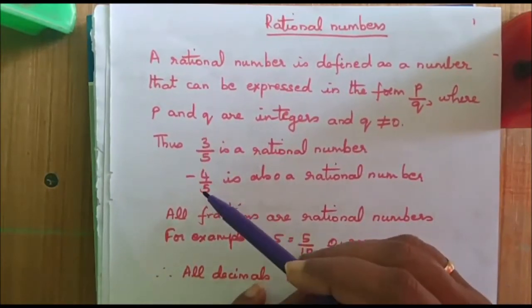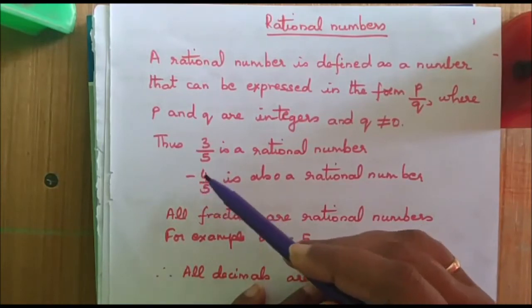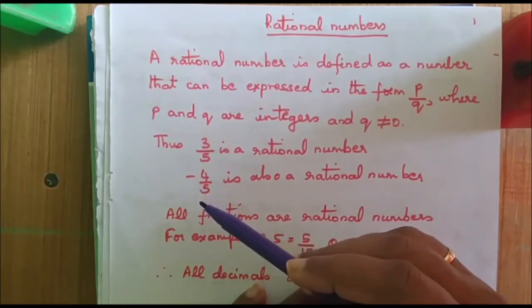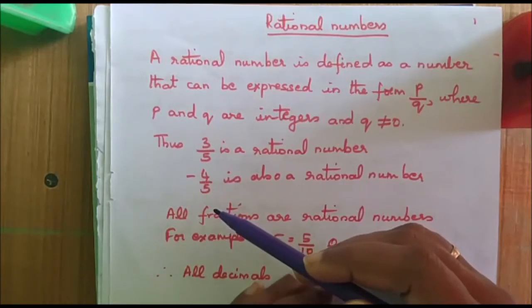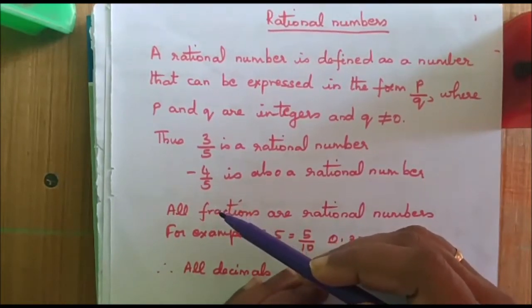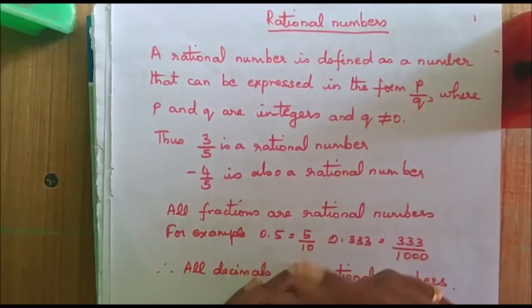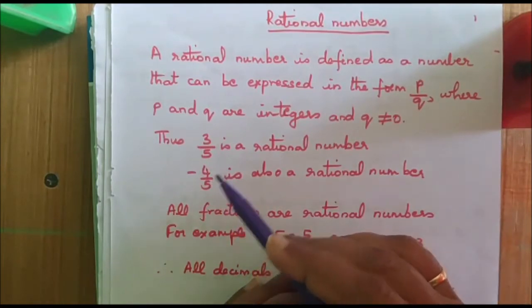Let me take another one, minus 4 by 5. This is called as a negative rational number because it has the minus sign. Minus 4 and 5 are integers. Minus 4 comes on the left side of the scale when you mark it on the line.